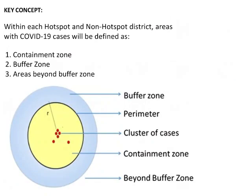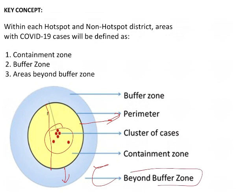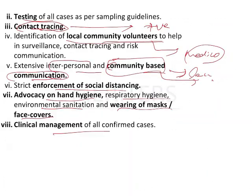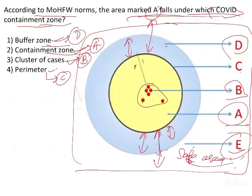To recap the key concepts: B is the cluster of cases, A is the containment zone, D is the buffer zone, C is the perimeter, and E is beyond the buffer zone. Coming back to the question, mark A — which is highlighted in yellow — is the containment zone. The answer is option 2, containment zone.